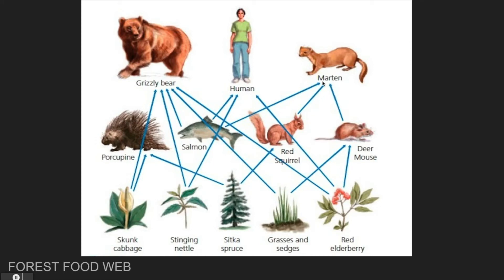These martens get their energy from different food, including salmon, red squirrel, and a deer mouse. Now that we know that a marten eats deer mouse, red squirrels, and salmon, what type of consumer does that make the marten? Is it an herbivore or is it a carnivore? If you said the marten is a carnivore, that is correct. The marten is an example of a carnivore because it eats other animals for its energy and food.